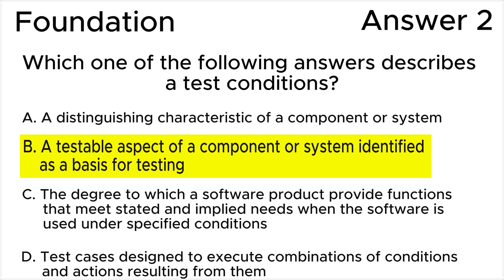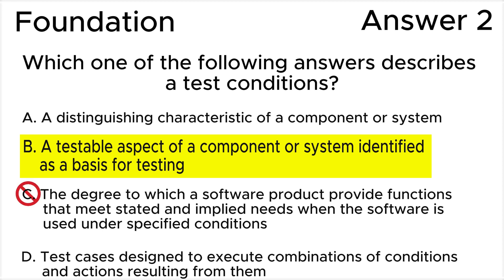Answer A is the definition of 'feature' according to the glossary. Answer C is the definition of 'functionality suitability' according to the glossary. Answer D is the definition of 'decision table testing' according to the glossary.